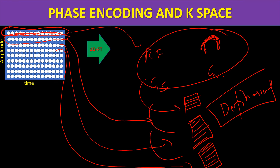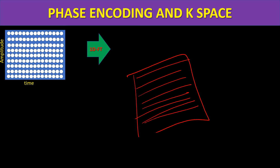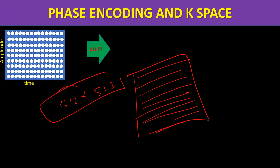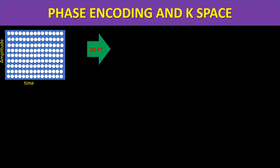By giving multiple dephasing gradients, I repeat the same process for each step. I take the same slice and measure it multiple times. The number of times I have to measure depends on the number of phase encoding steps I want. For a 512×512 matrix, I have to repeat the entire step 512 times to fill 512 lines in k-space. This is how we fill k-space — each line represents one phase encoding step.